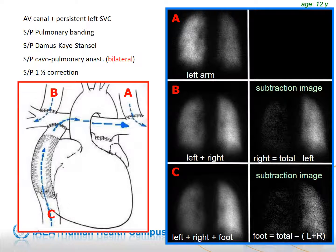In this case, the tracer dose has to be divided into three injections to evaluate pulmonary perfusion. Injection in the left arm shows the contribution from the left persistent superior vena cava, as seen in image A. Injection in the right arm depicts the contribution from the normal right superior vena cava, as seen in image B. The third injection, in the lower limb, shows the flow from the inferior vena cava.